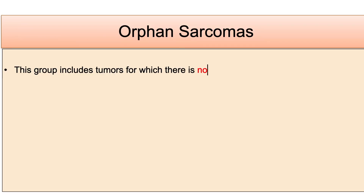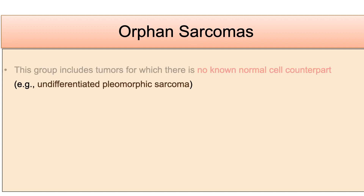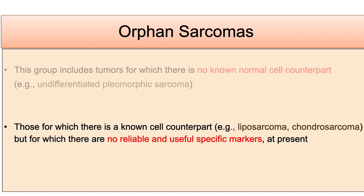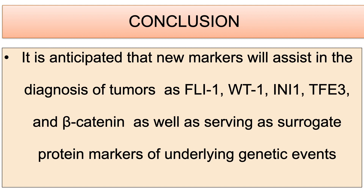Orphan sarcomas include tumors with no known normal cell counterpart, such as undifferentiated pleomorphic sarcomas, and those with a known counterpart like liposarcoma and chondrosarcoma but no reliable specific marker. In conclusion, new markers such as FLI1, WT1, INI1, TFE3, and beta-catenin are anticipated to assist in diagnosis as surrogate protein markers for underlying genetic events. Overall, immunohistochemistry is very important for soft tissue sarcoma diagnosis but does not replace histomorphology—morphology should guide differential diagnosis, which then drives selection of a specific IHC panel.